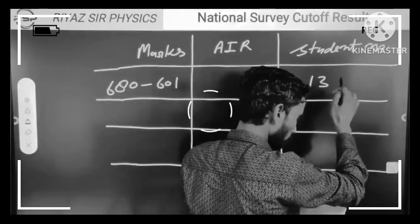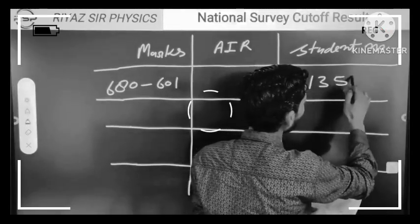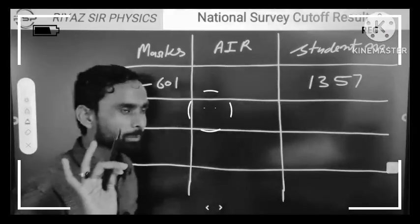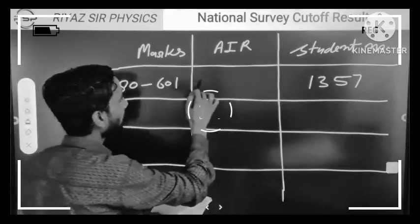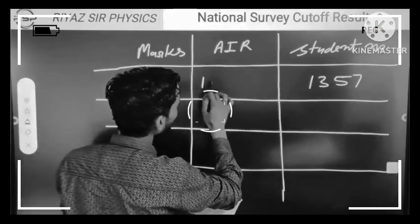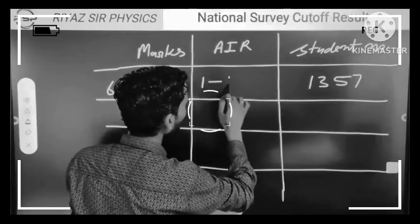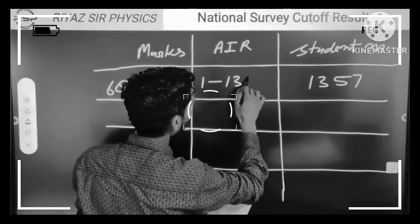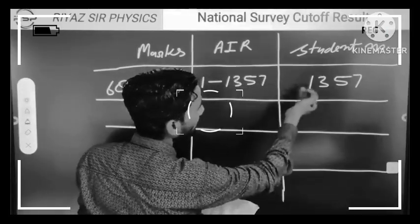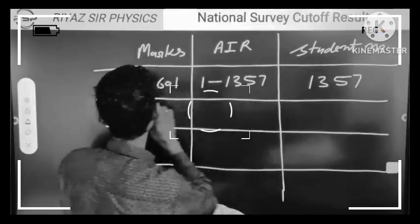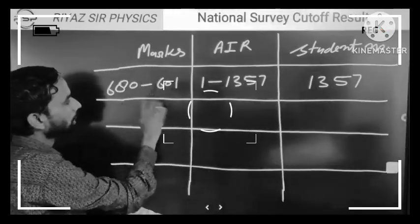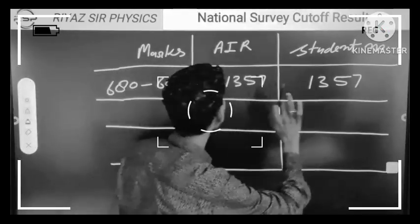We have got 1357 students. This means that from year one to this many years, you are going to get in this many marks. How many students did we get from 680 to 601? We got 1357 students.